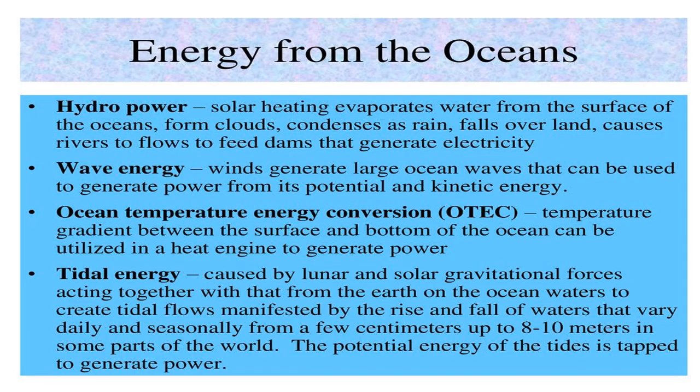These are the energy from the oceans. The different forms of energy from the oceans are: the first one is hydropower. Solar heating evaporates water from the surface of the oceans, forms clouds, condenses as rain, falls over land, causes rivers to flow and feeds dams that generate electricity. This is hydropower.